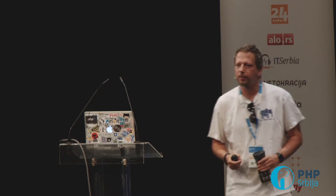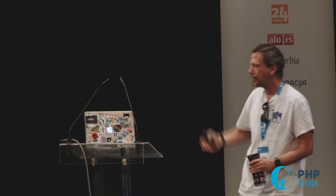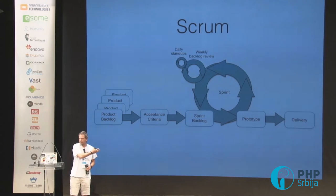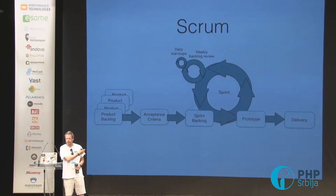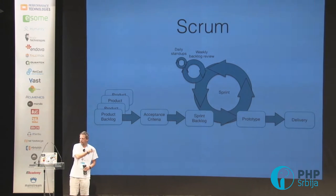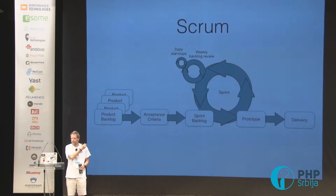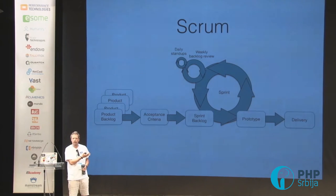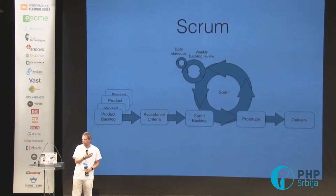Another process is Scrum. More people using Scrum? So this is all familiar to you. You have the backlog, then acceptance criteria, the sprint, the sprint is in execution, you have your weekly backlog reviews and your daily stand-ups, the prototype comes out, and then of course the delivery.